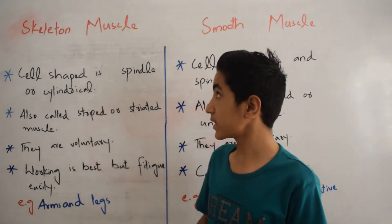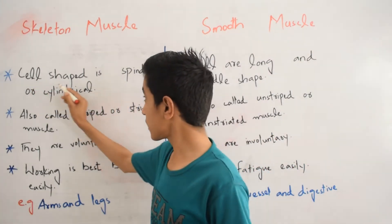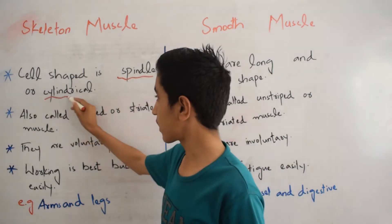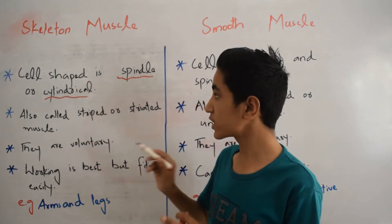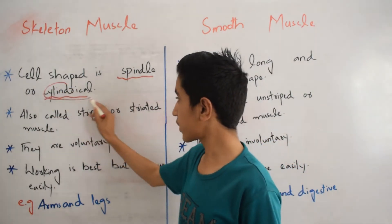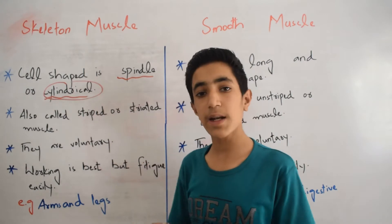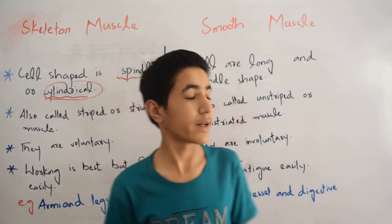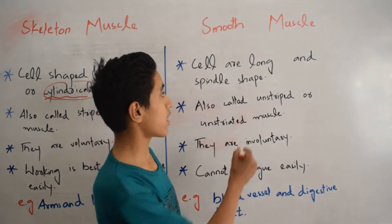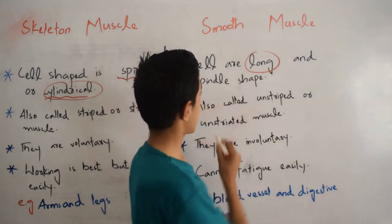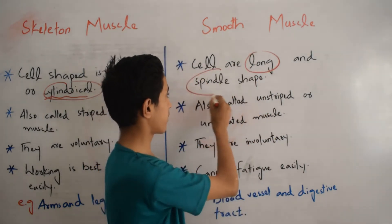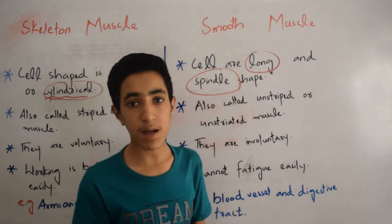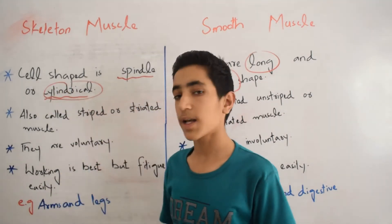The first difference is that skeletal muscle cell shape is spindle or cylindrical shape — cylindrical means like a cylinder. While on the other hand, the smooth muscle cells are long and spindle shaped. Both cell shapes are spindle shaped, but skeletal muscle cell shapes will be cylindrical.